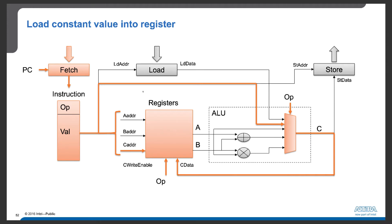When we load a constant value into a register, we do not use memory components — we encode the constant value in the instruction. So when the constant value is decoded from the instruction, this value goes through the ALU, which does nothing in this case, and the output from the ALU is loaded into the register. It's not the best way, but given the fixed datapath, this is the only way to initialize a constant value into registers.